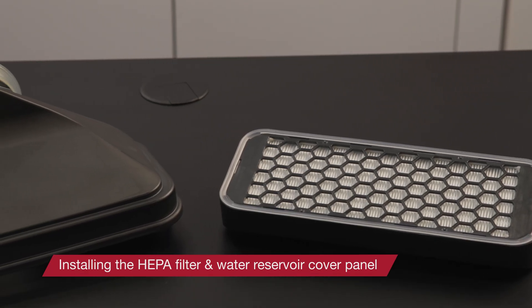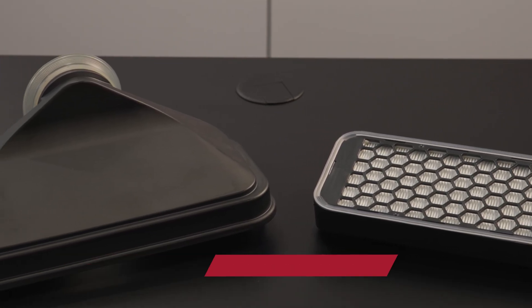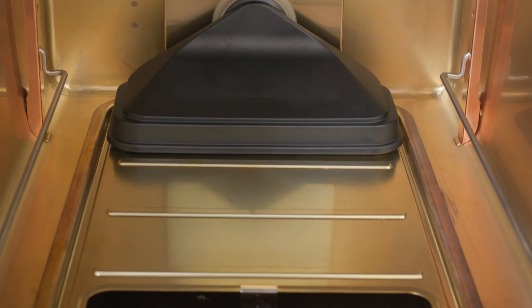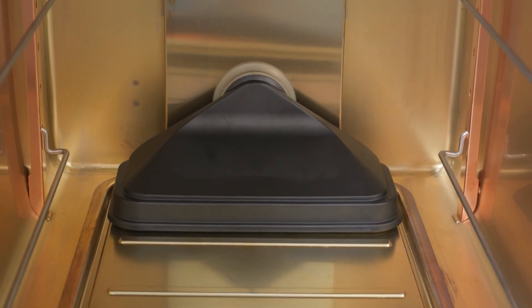The HEPA filter and water reservoir cover panel must be inserted into the air box from below. To assemble the HEPA filter and air box, start by placing the HEPA filter on a flat surface.